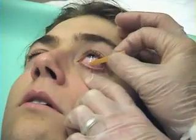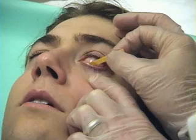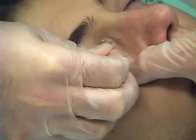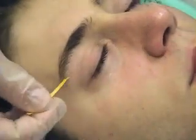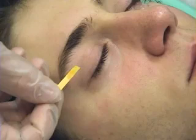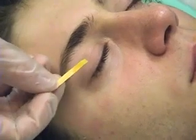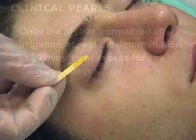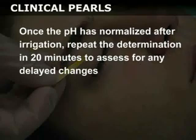Resweep both the inferior and superior fornices to remove any residual particles that cannot be visualized. Check the pH of the eyes again after irrigation. If a neutral pH of 7.0 has not been achieved, continue the irrigation. Once the pH has normalized after irrigation, repeat the determination in 20 minutes to assess for any delayed changes.